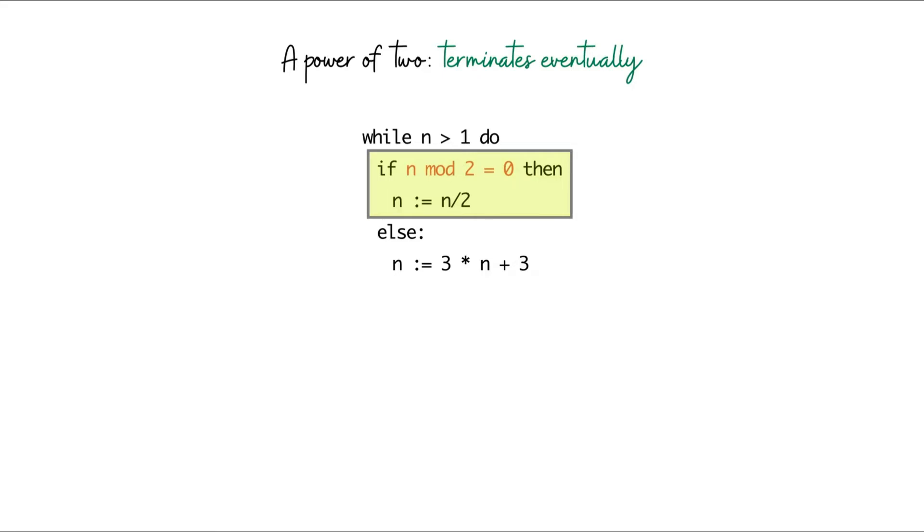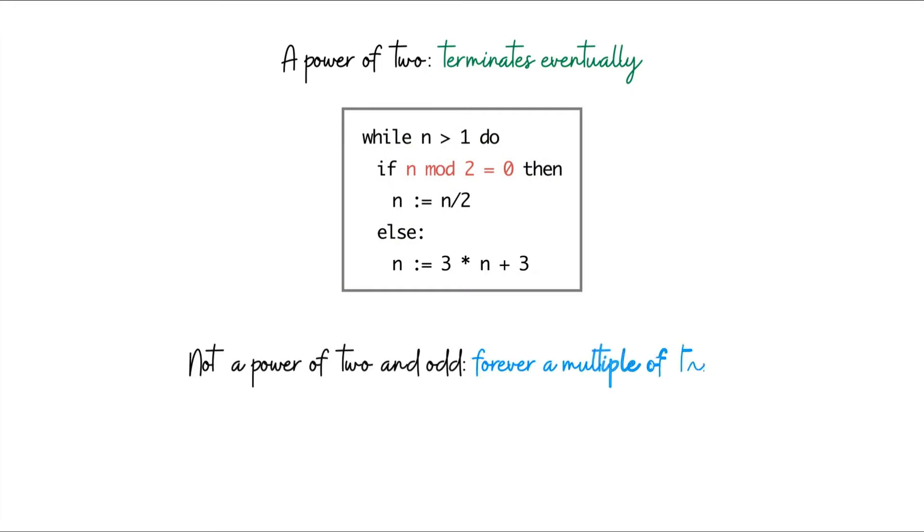Now let's consider the other possibility: that n is not a power of 2. Let's split this into two scenarios. What if n is not a power of 2 and is odd? In this case, notice that n is always going to be a multiple of 3. Indeed, in the very first step n gets transformed into 3 times n plus 3, so it's clearly a multiple of 3. Since in future iterations we never divide by 3, it's clear that n will always be a multiple of 3. For this reason, it's never going to reach a value of 1, and the program is going to run forever.